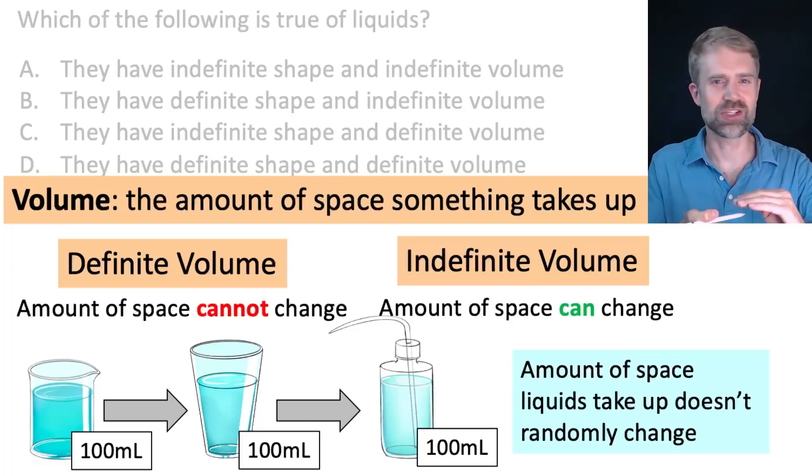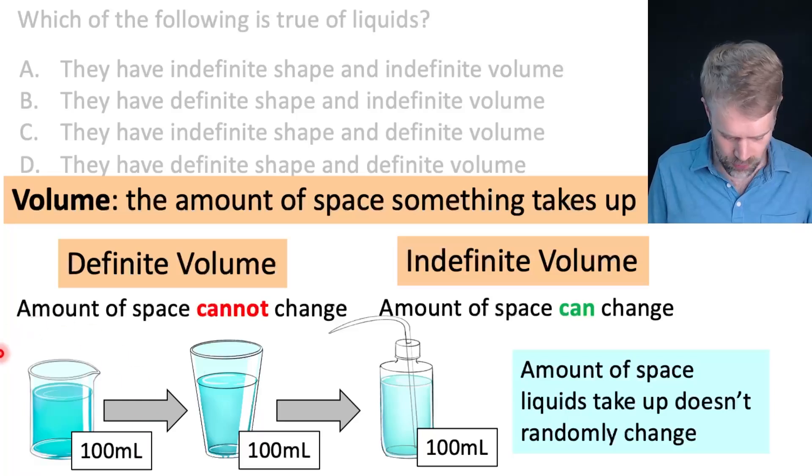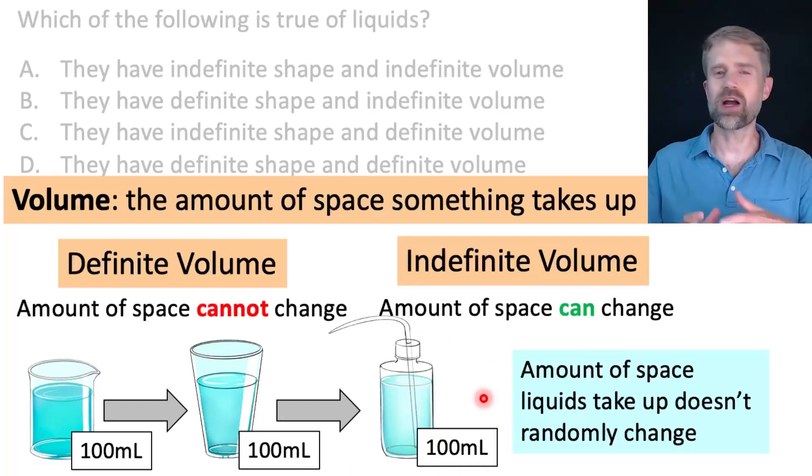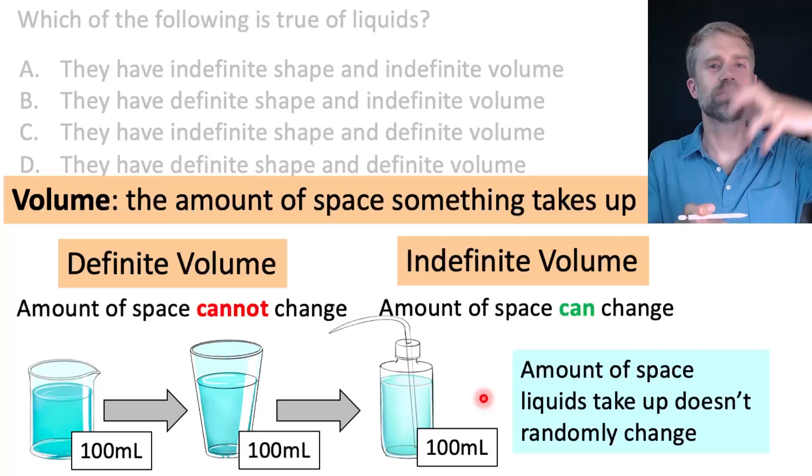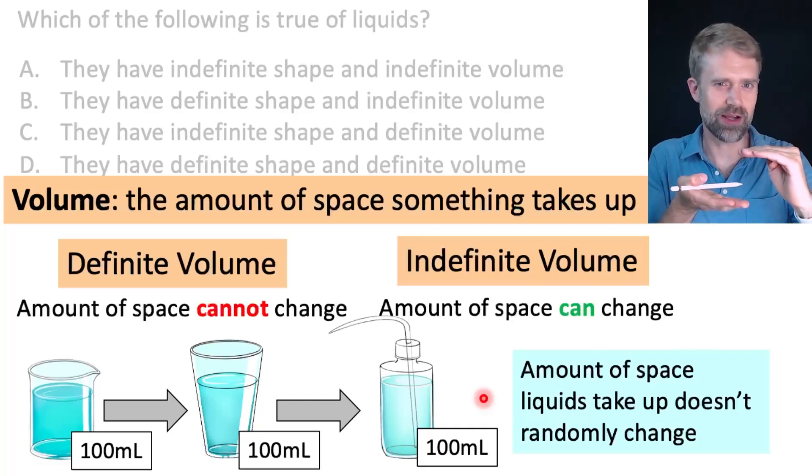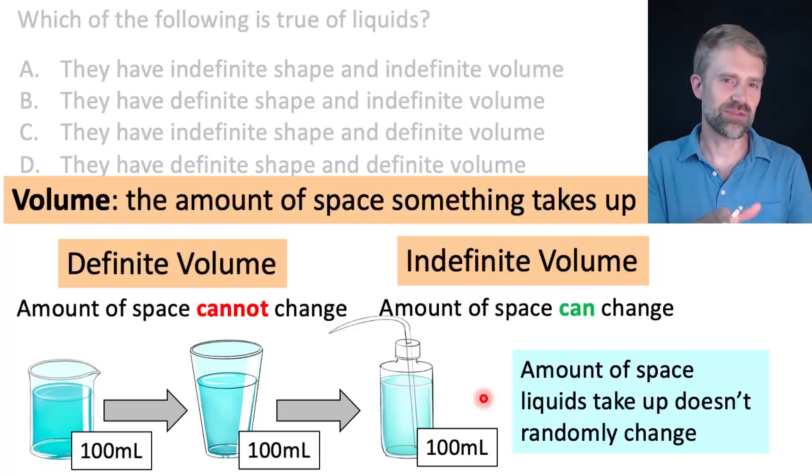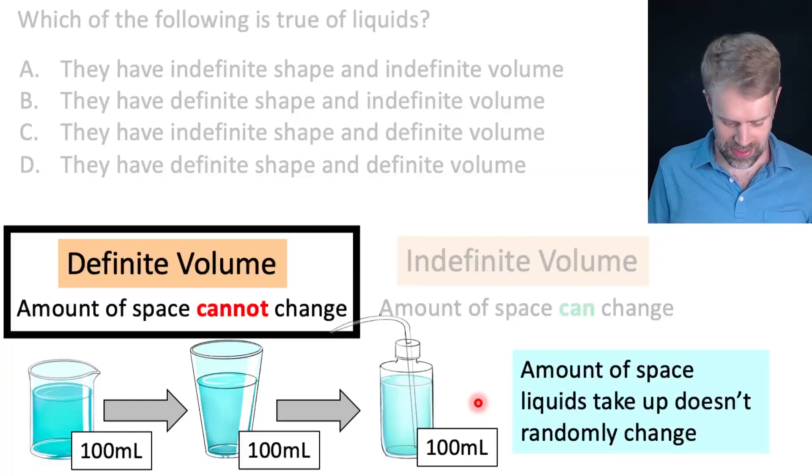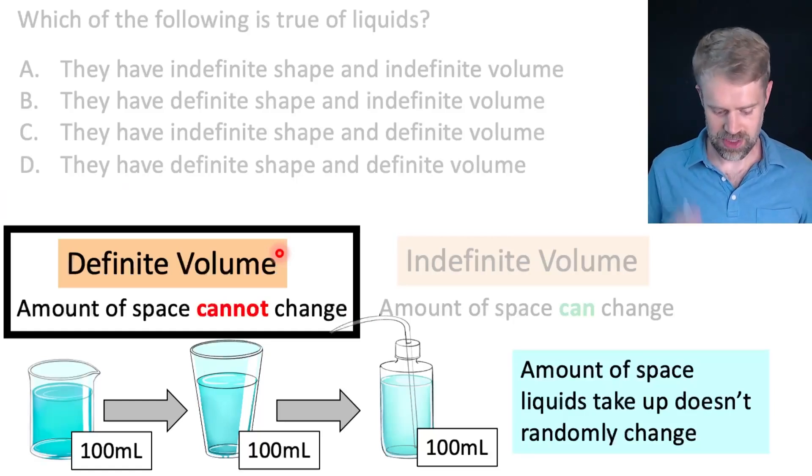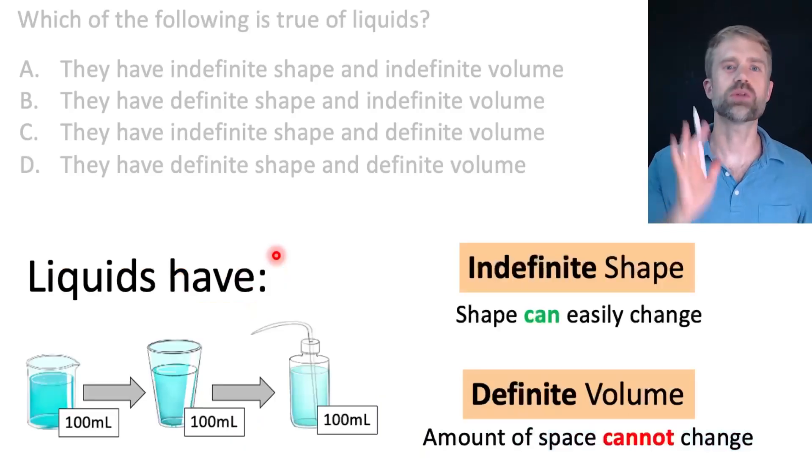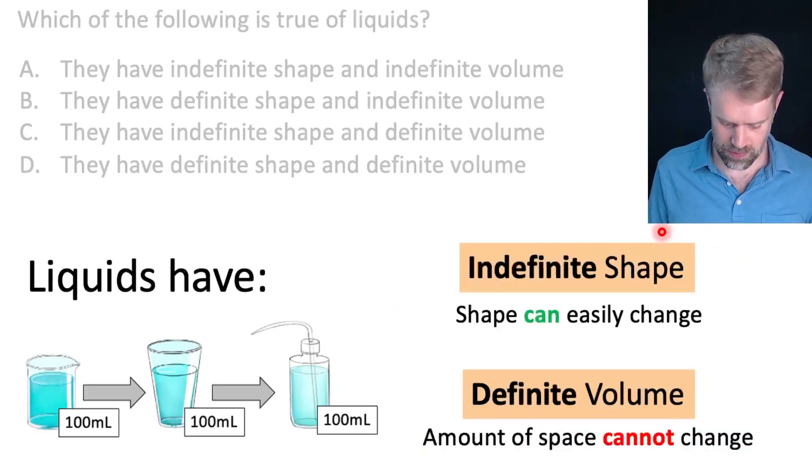You don't watch a liquid randomly just getting bigger to take up more space or randomly shrinking down to take up less space. If you have, say, like 100 milliliters of water, it stays 100 milliliters even when you pour it from one container to another. And when we're talking about volume here and changing, I'm not talking about, you know, like evaporation, right? Where you have a glass of water and over two or three days some of that water evaporates and so the level in that water kind of slowly goes down. No, no. I'm not talking about that. When we talk about definite or indefinite volume, we're talking about whether the volume of that liquid changes over just a couple minutes. And no, the volume of liquid doesn't usually change. That's why it is definite. Definite volume, the amount of space that a liquid takes up cannot usually change. So, to sum it up, liquids have indefinite shape and definite volume.